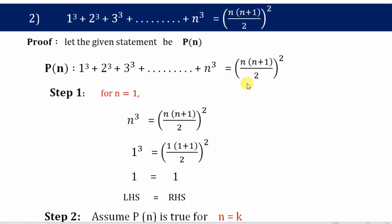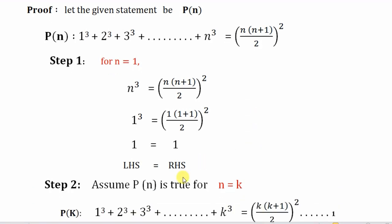Next, step 2. In step 2 we assume that the given statement P(n) is true for other natural numbers also, that is n equals k. We replace all the n's by k, and let us name this equation as 1.